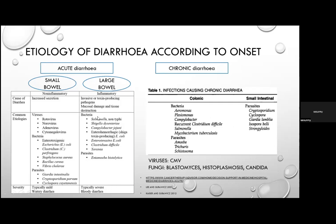Large bowel diarrhoea is mainly inflammatory, with invasive or toxin-producing pathogens causing mucosal damage and tissue destruction. Implicated organisms are mainly bacterial: non-typhoidal Salmonella, Shigella dysenteriae, Campylobacter, enterohaemorrhagic E. coli, Clostridium difficile, Yersinia, and Entamoeba histolytica. This typically causes severe diarrhoea that may be bloody, with systemic signs.